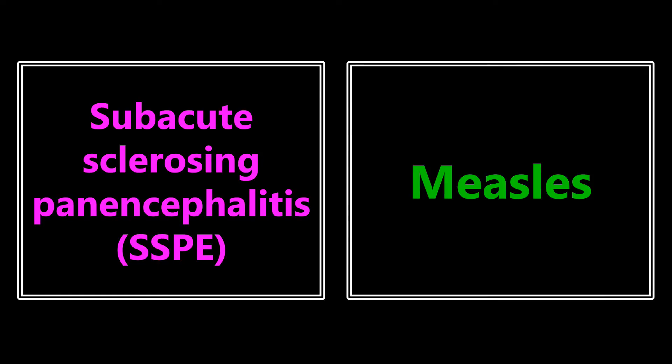Subacute sclerosing panencephalitis — this is a pretty dangerous sequela of measles.